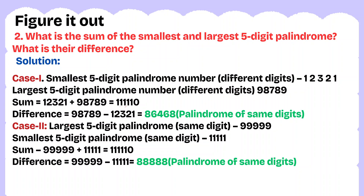Case 2: when using the same digits, the largest 5-digit palindrome is 99,999 and the smallest is 11,111. The sum is 1,11,110. The difference between largest and smallest is 88,888, which is also a palindrome.